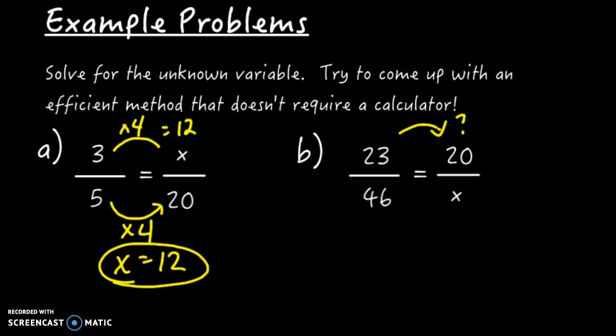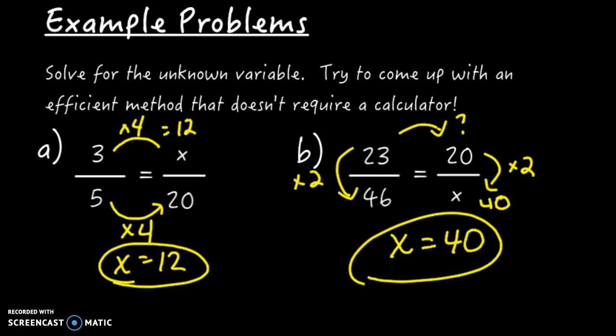But if we try to go top to bottom, to get from 23 to 46, all we have to do is multiply by 2. That's a nice convenient number. So we can do that same process from top to bottom on the right side. And 20 times 2 is 40. So x equals 40. You may have come up with a different way too, but I hope you see that's quite an efficient method.